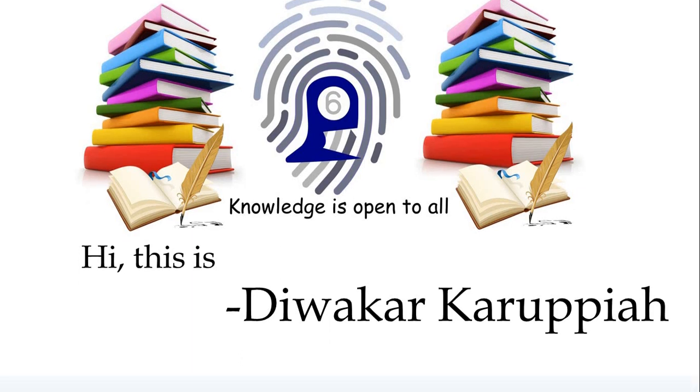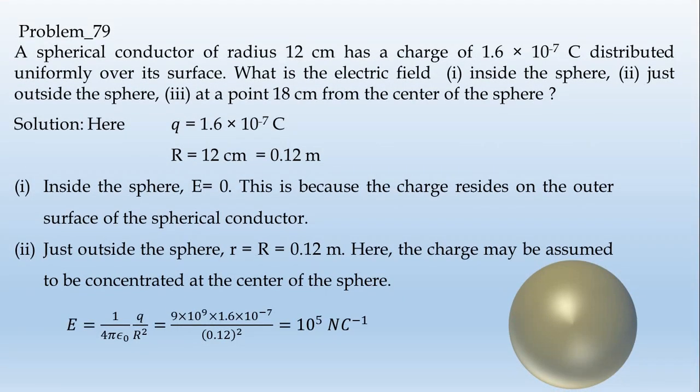Hi, this is Dibakar Karupaya. Problem number 79. A spherical conductor of radius 12 cm has a charge of 1.6 into the power minus 7 coulomb distributed uniformly over its surface.